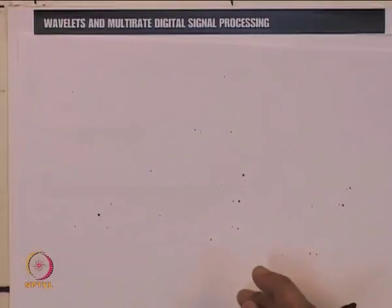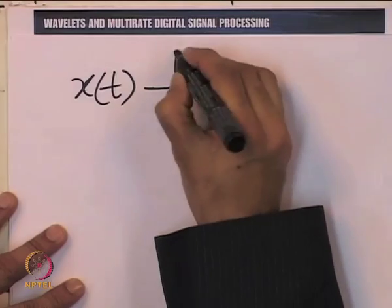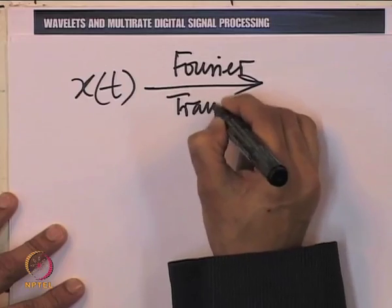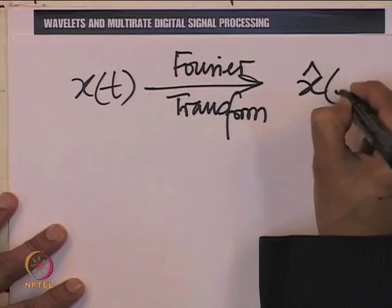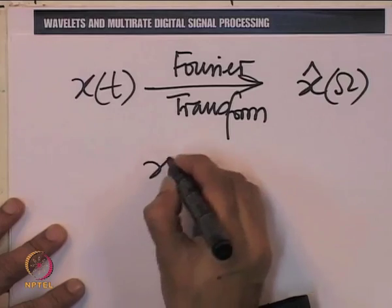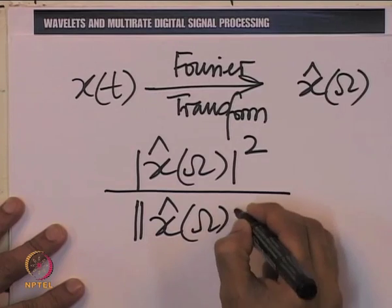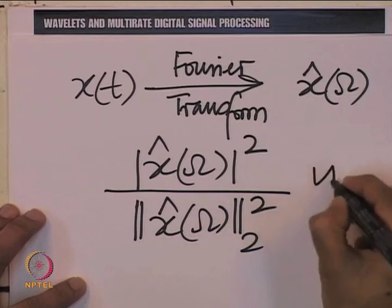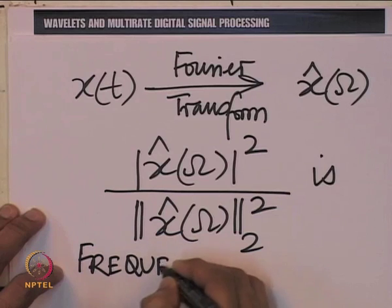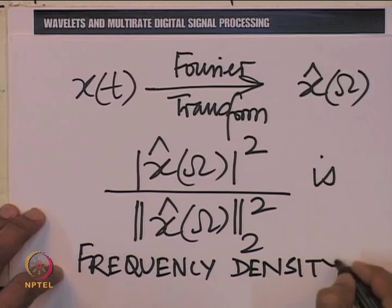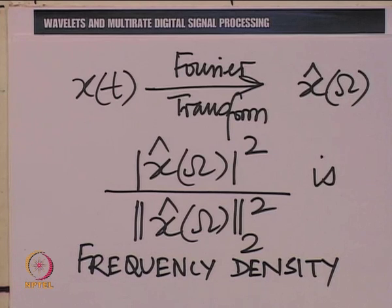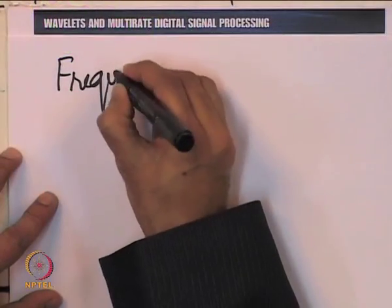Let us complete the definition by defining the frequency density. If x(t) has the Fourier transform x-cap(omega), where omega is the angular frequency, then mod x-cap(omega) squared divided by the L2 norm of x-cap(omega) squared is the frequency density. One can conceive of a mean and a variance in terms of frequency, giving us the frequency center or frequency mean.